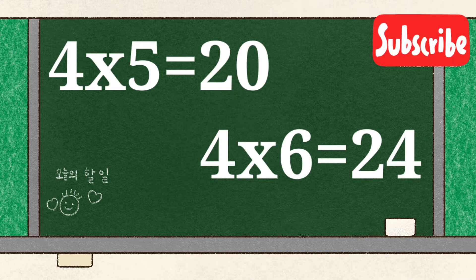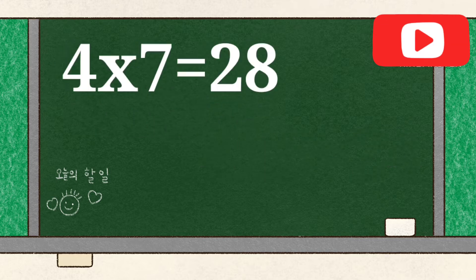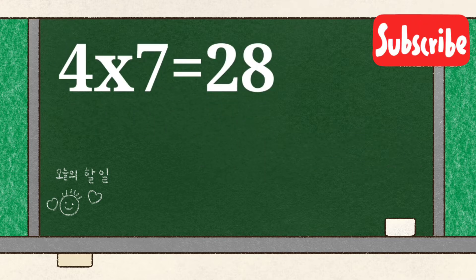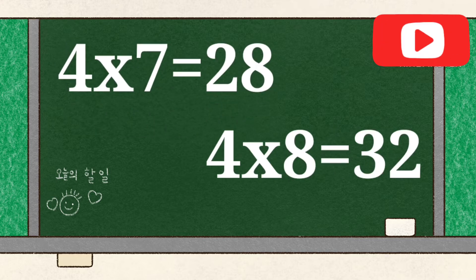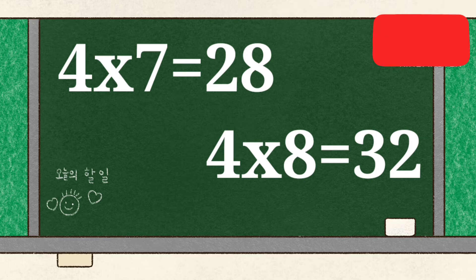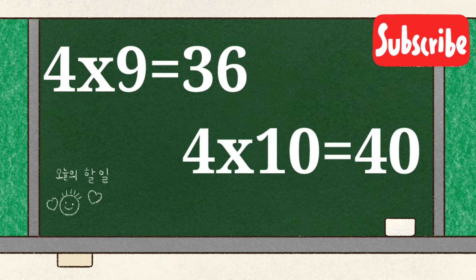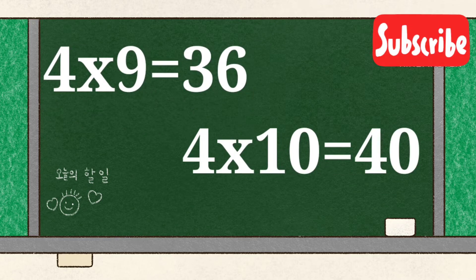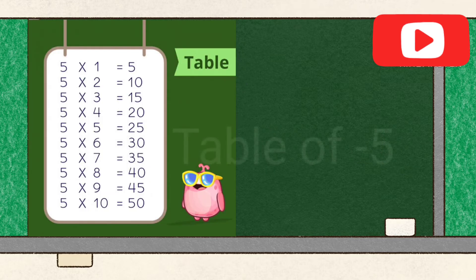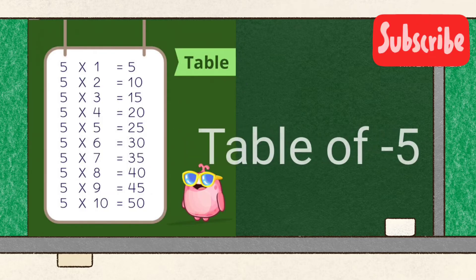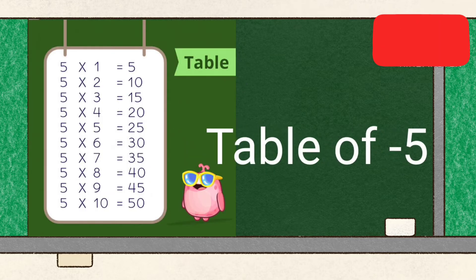4 6's are 24, 4 7's are 28, 4 8's are 32, 4 9's are 36, 4 10's are 40. Table of 5.